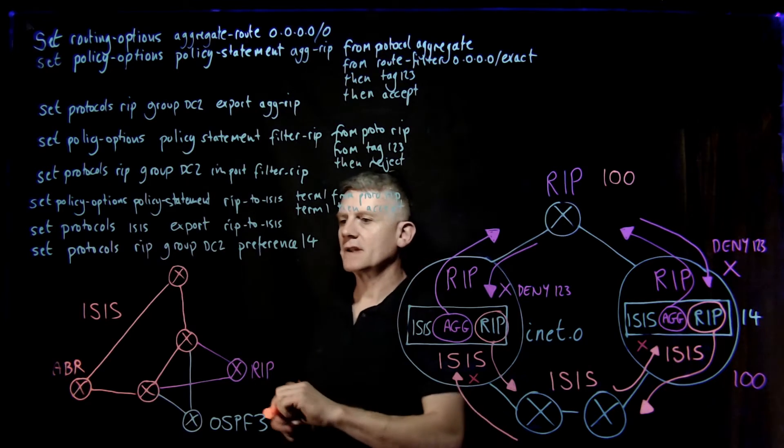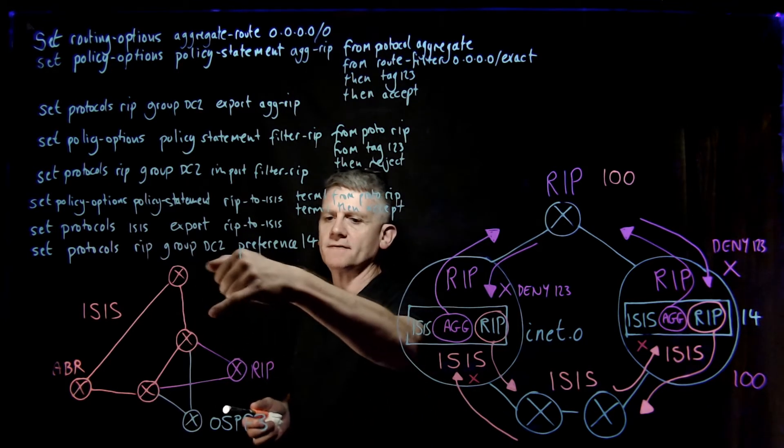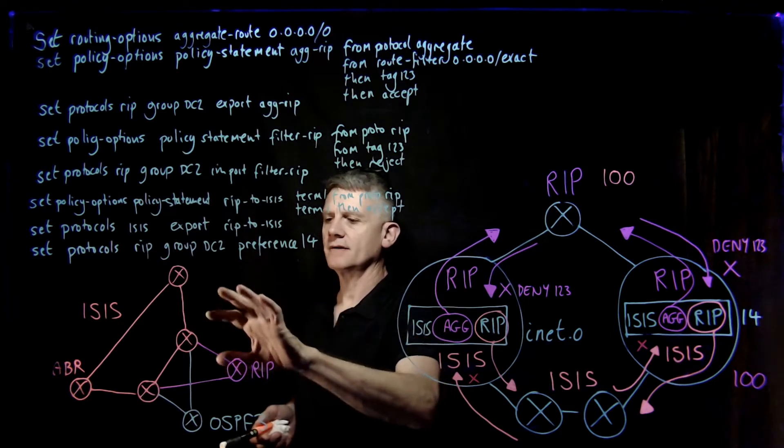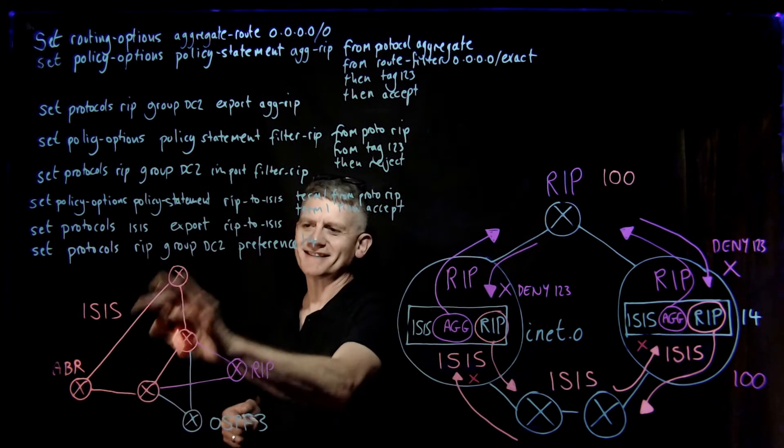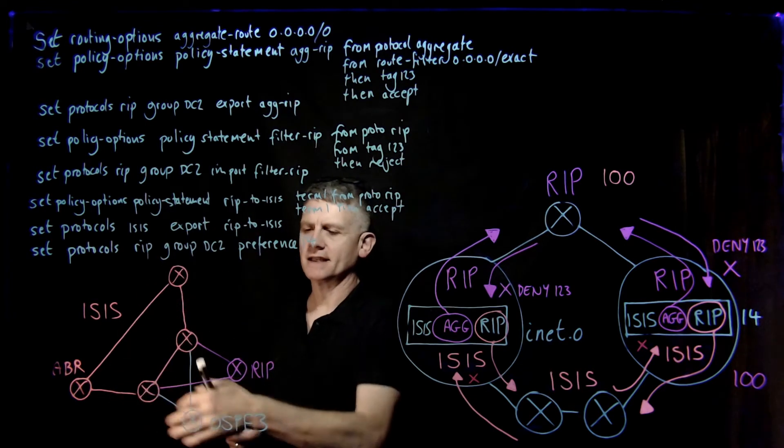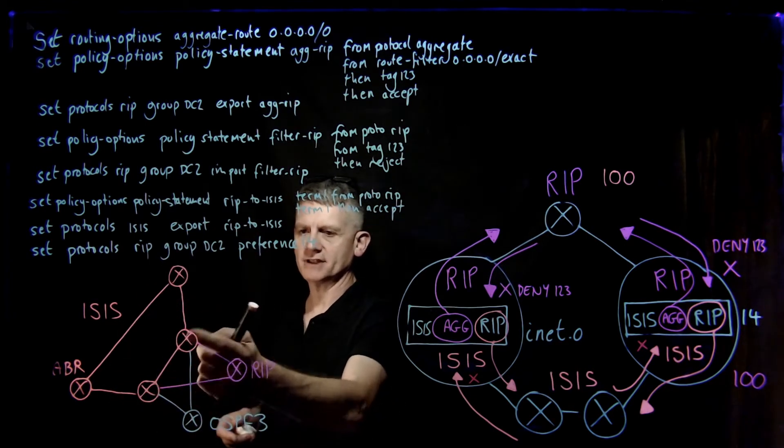So we would like to export a default route to begin with into RIP. Only problem is ISIS doesn't have one. The ABRs here in ISIS are setting the attach bit, and these routers here are generating their own route.